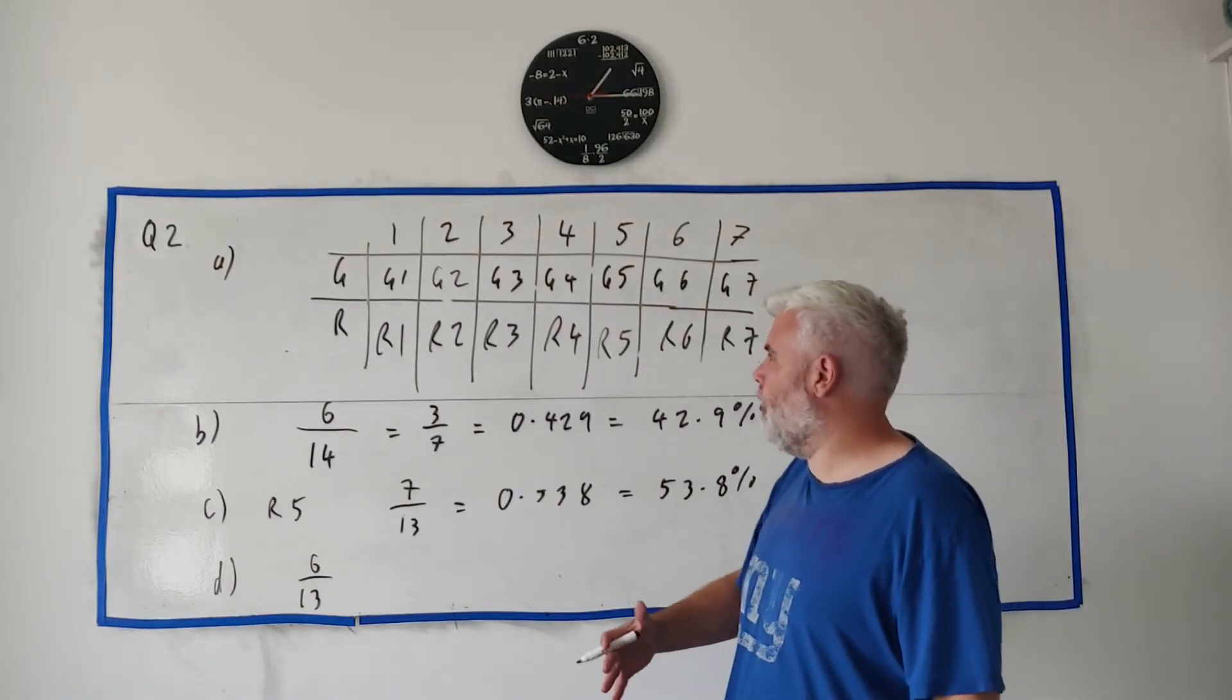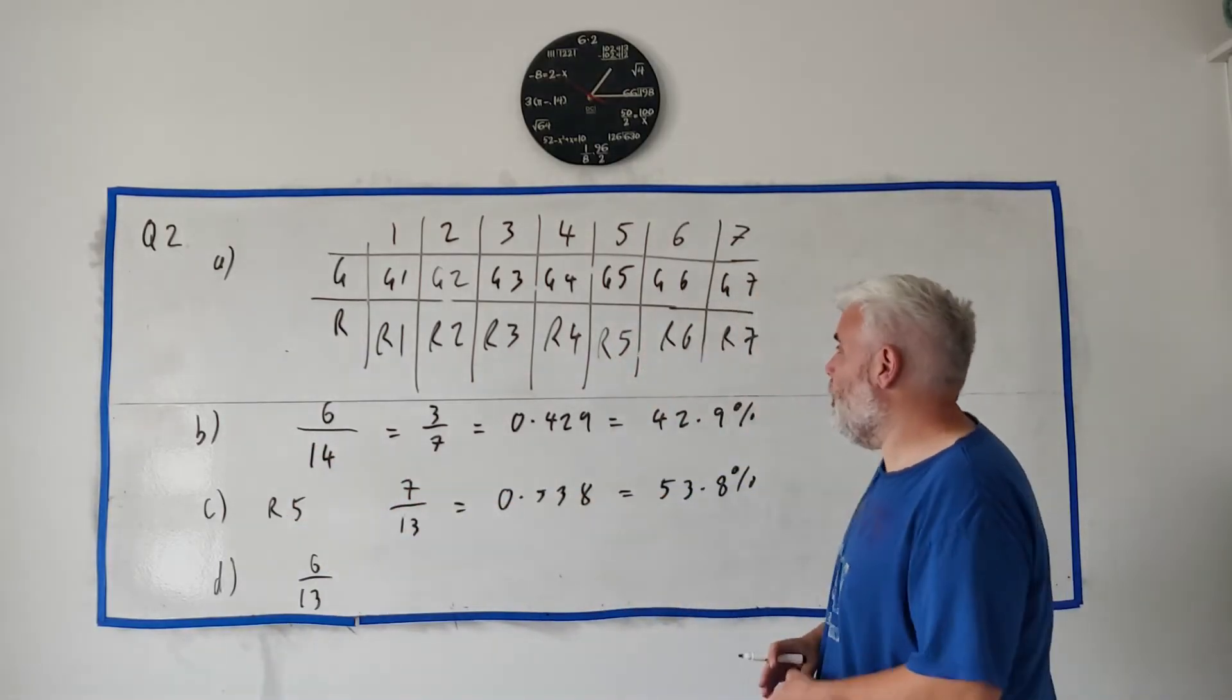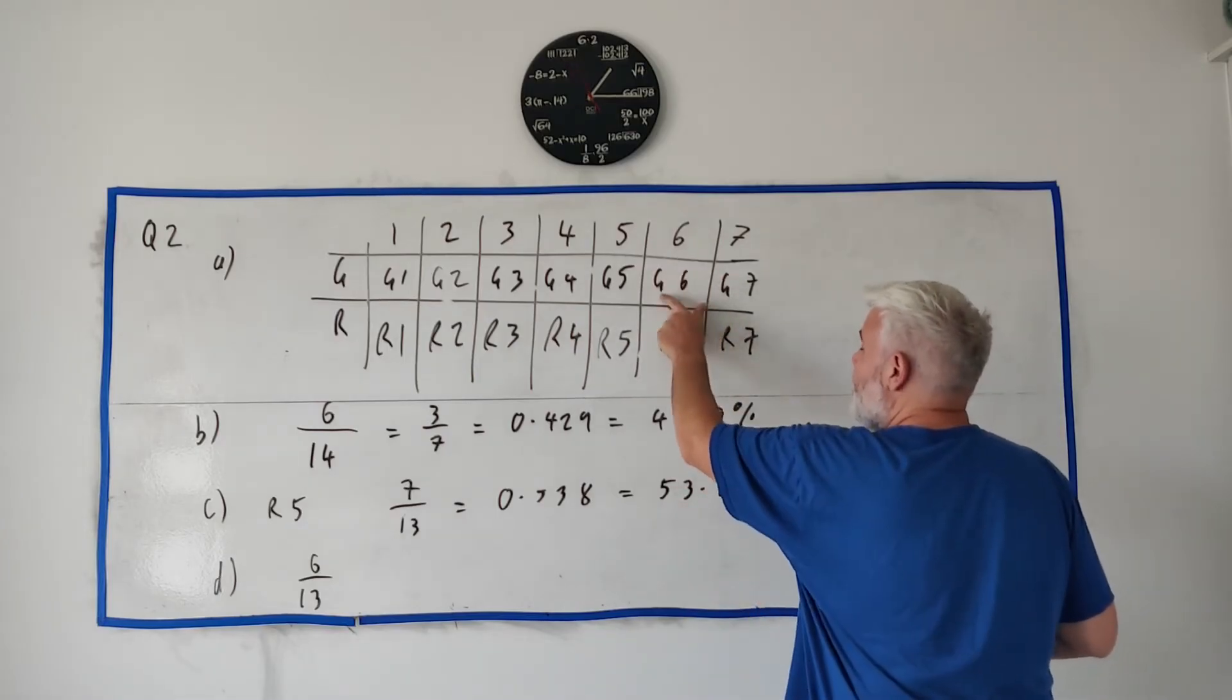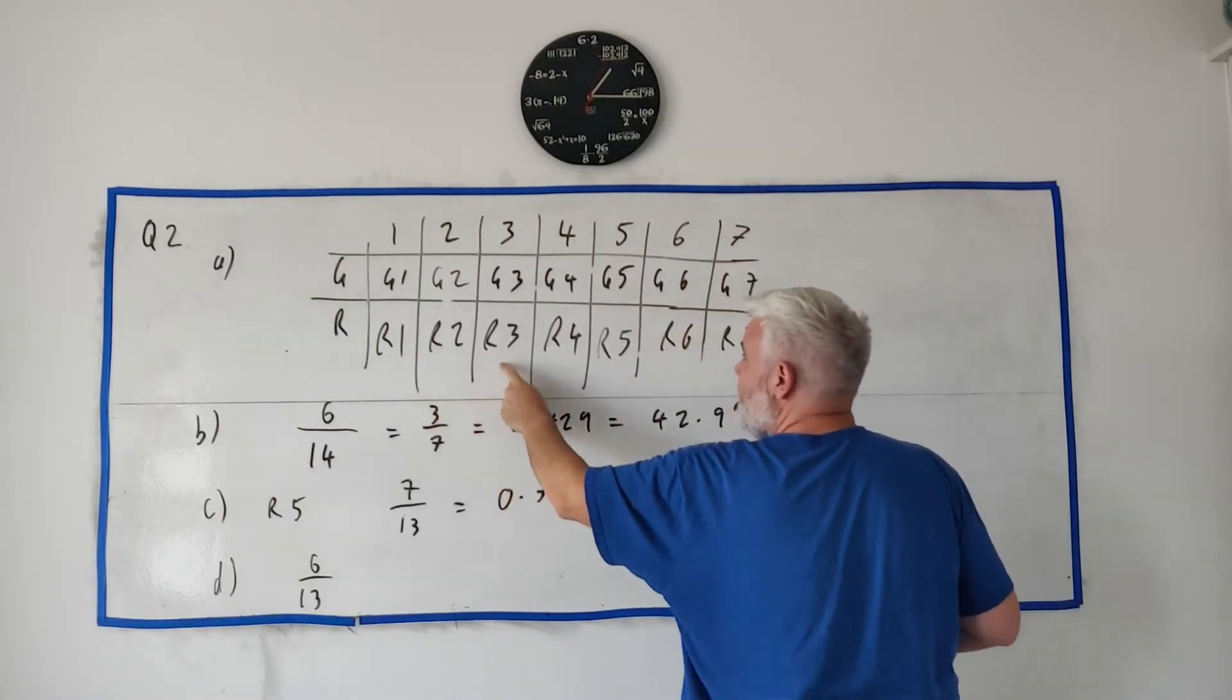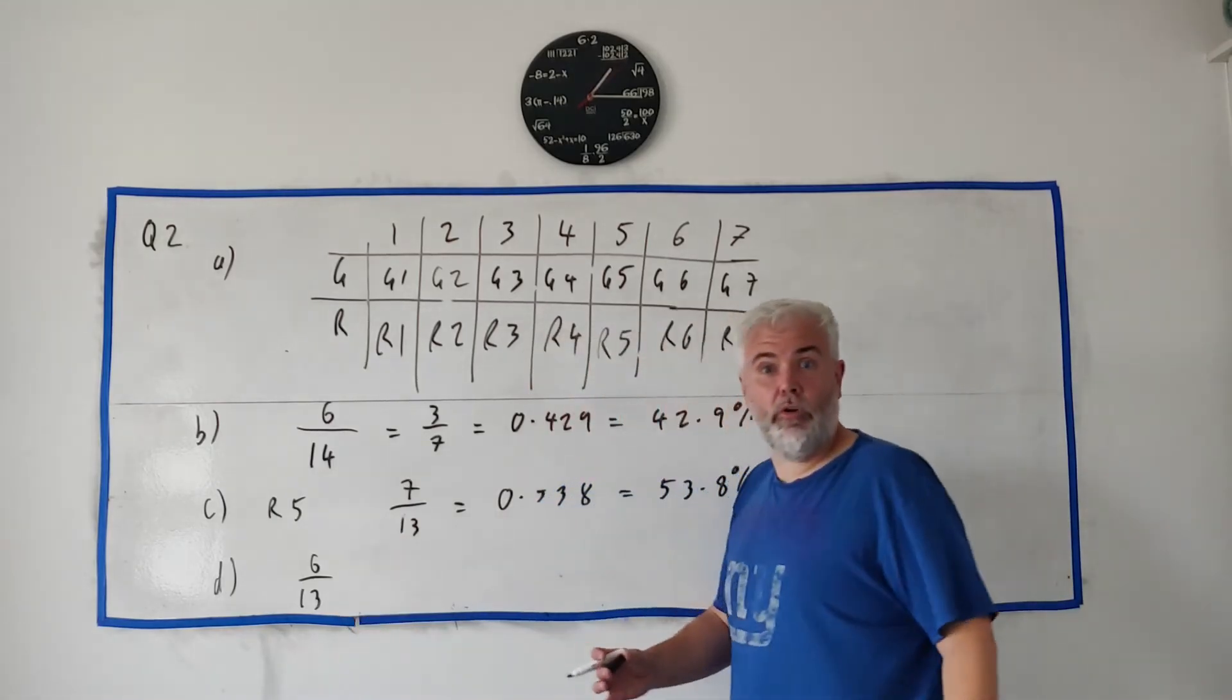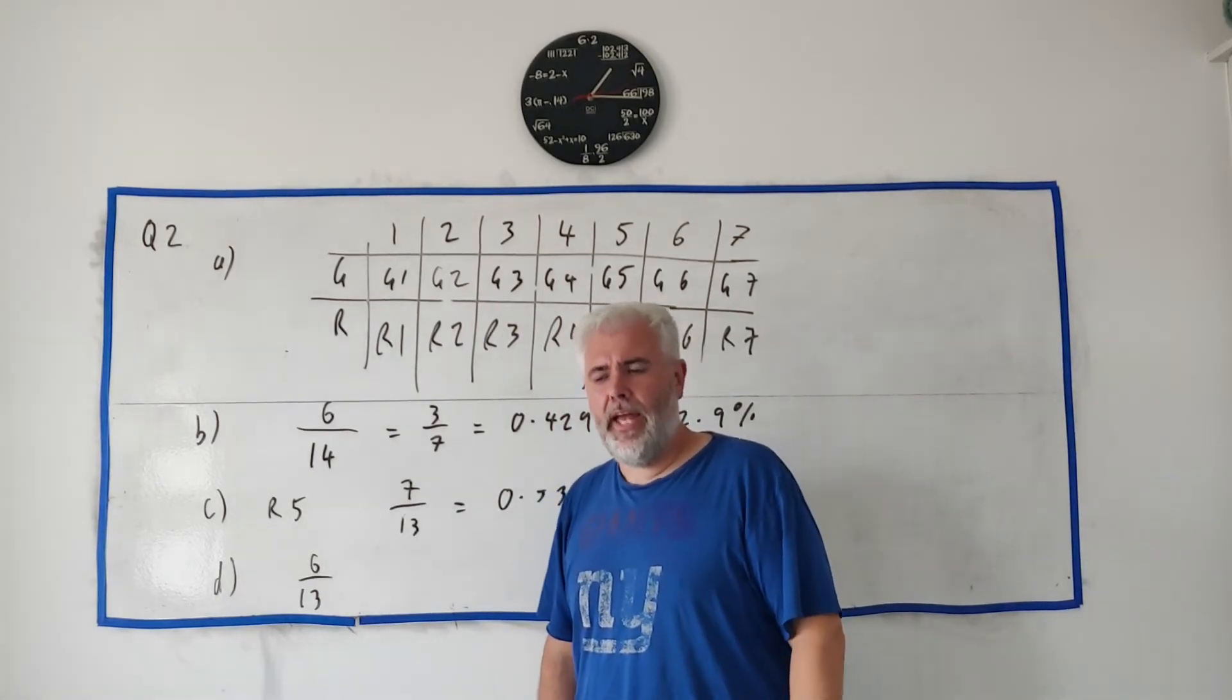You might say, okay, maybe that was a fluke. Maybe this only works when he picks R5. Well then you think: what if he picked green six? Would the odds have been different? Green six—different color has to be red, different number can't be six. Again, there's only six possibilities out of a total of 13. So it doesn't matter what comes out first. 6/13 is the answer.